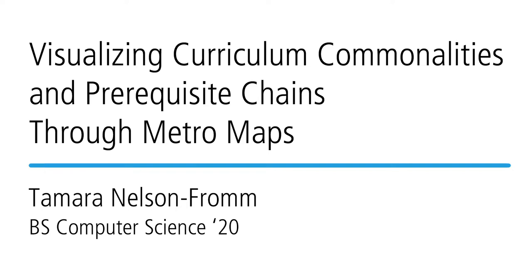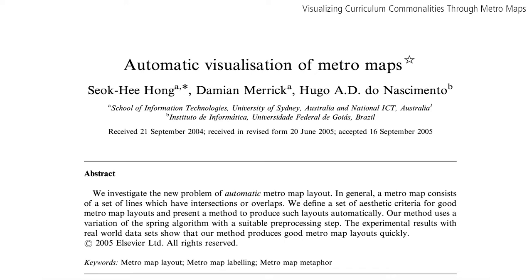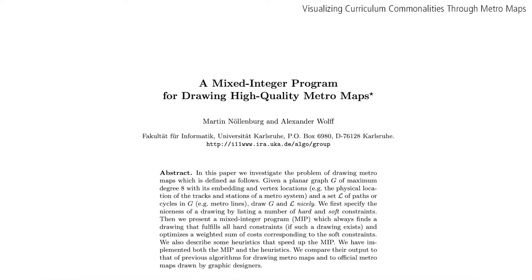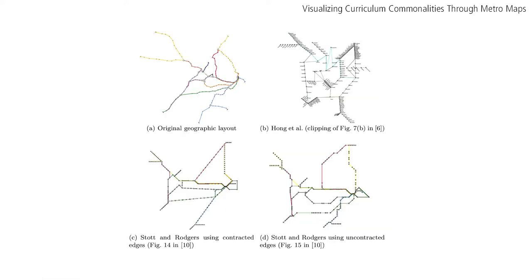There have been past work in computationally generating metro maps using the stations and lines of existing geographical maps. Many of these methods specify that no station can be connected to more than eight lines and weren't suited for my purposes.